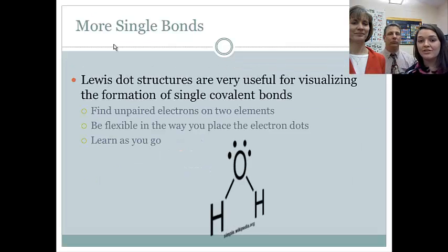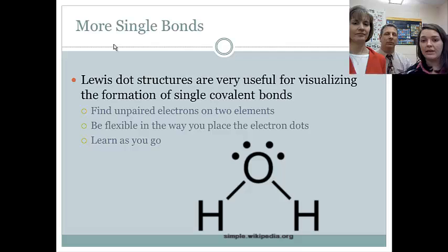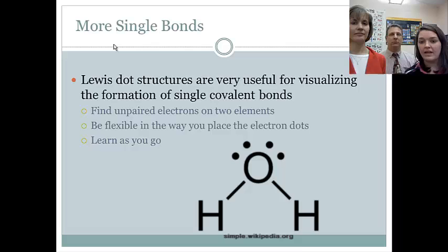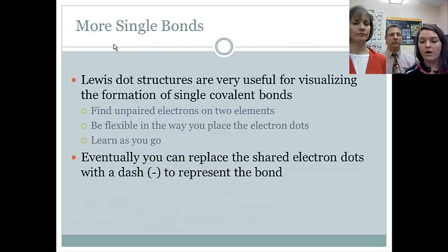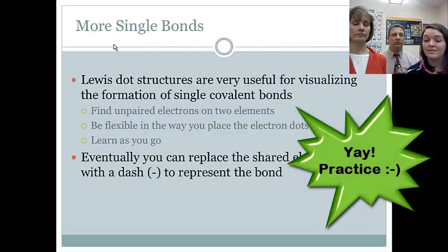We can use our Lewis dot structures, and we've been doing that in class a little bit now, to not only visualize each of our individual atoms, but also the formation of that single covalent bond. So when we do this, we want to write out our valence electrons for each of our elements, find any unpaired electrons there are, and then pair them up so that they're sharing those unpaired electrons. And when you're doing this, just make sure that you're being flexible where you put your electron dots. And we've got to practice, which is what we're going to be doing a lot in class.